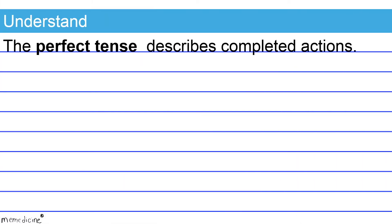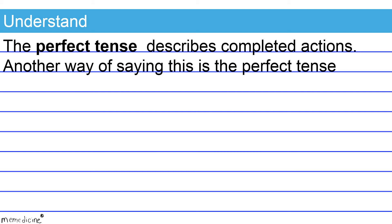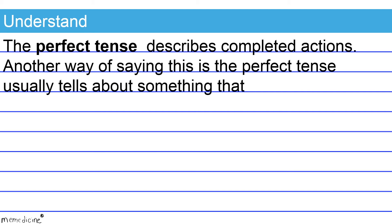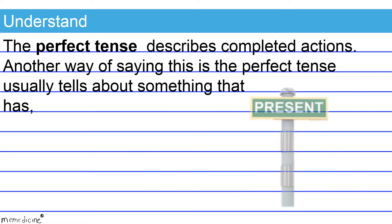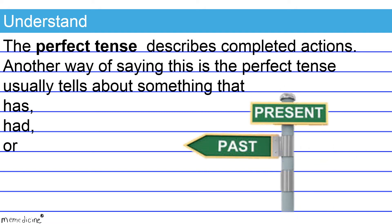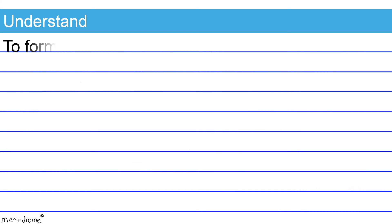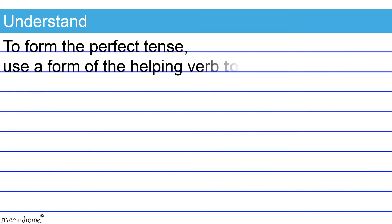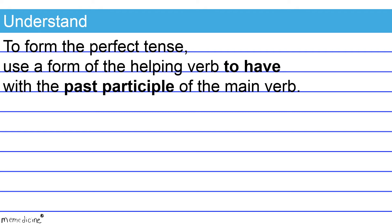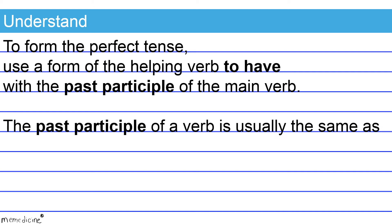The perfect tense describes completed actions. Another way of saying this is the perfect tense usually tells about something that has, had, or will have happened. To form the perfect tense, use a form of the helping verb 'to have' with the past participle of the main verb. The past participle of a verb is usually the same as its simple past tense form.